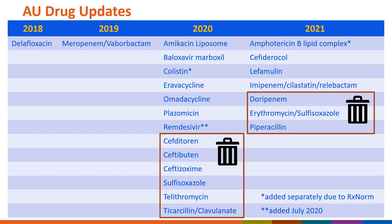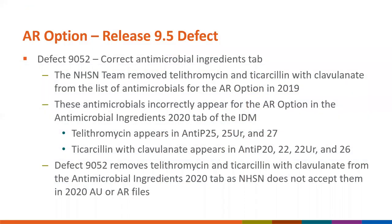I want to point out that Amphotericin B lipid complex as well as Colistin, which was added for 2020, are not newly approved FDA drugs. Instead, we're adding them as separate drugs for the AU option because they do have separate RxNorm codes. We'd like to capture them separately to make sure they are, in fact, being captured. There is also a defect within the Antimicrobial Ingredients 2020 and 2021 tabs within the IDM—tulathromycin and ticarcillin with clavulanate were removed from the AR option drug panels in 2019, but these drugs are still incorrectly appearing in the 2020 and 2021 AR option drug panels. This defect will clean up those two IDM tabs.